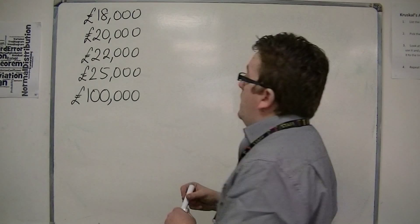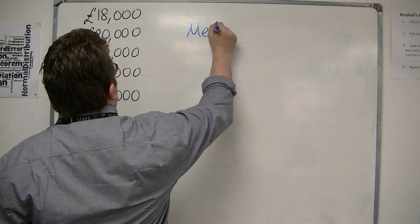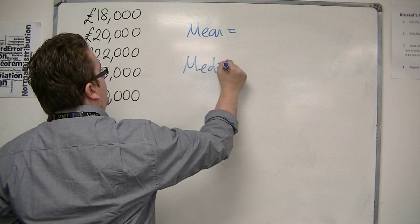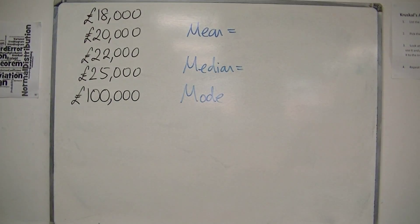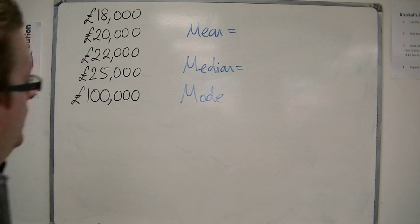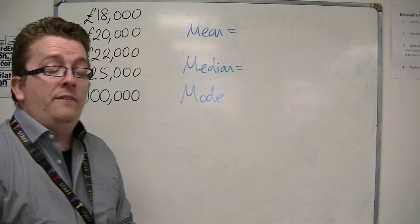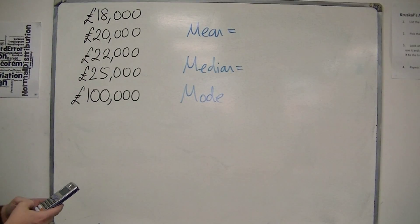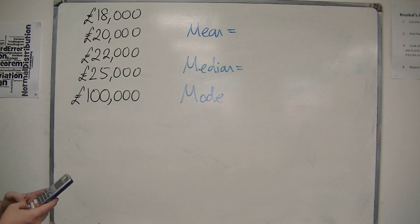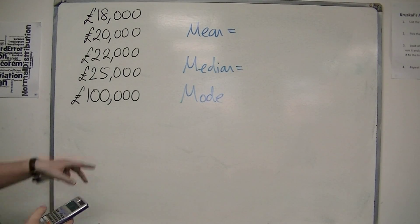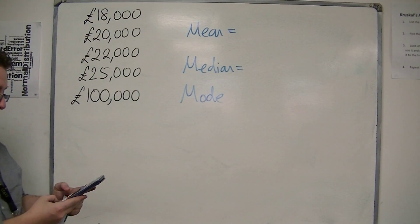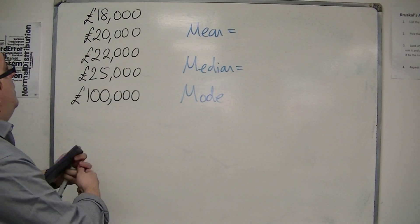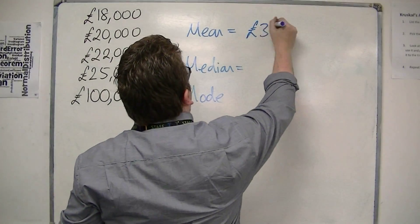We're going to look at the mean, median, and mode of these five. First of all, the mean — we're going to add them all up and divide by how many there are. We've got £185,000 between them, and then you divide that by five, and that would give £37,000 for the mean.